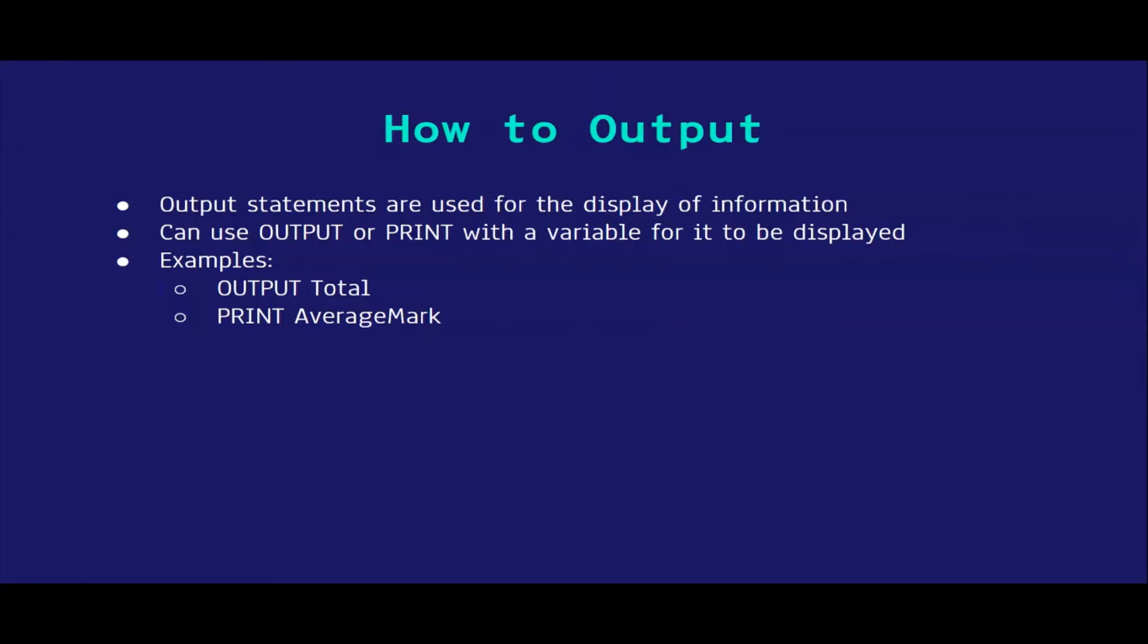Next is how to output. Output statements are basically used for displaying information. You can use the word OUTPUT or PRINT with a variable so that it can be displayed. Some examples are output total and print average mark. For example, these variables of total and average mark are calculated in the pseudocode.